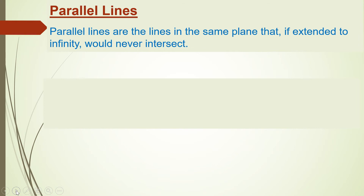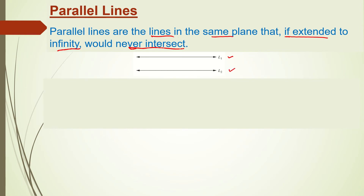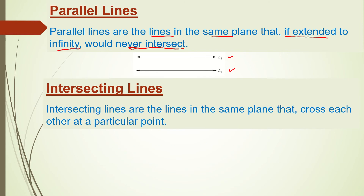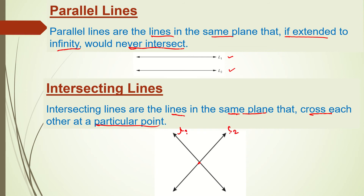Now let us talk about parallel lines and intersecting lines. Parallel lines are lines in the same plane that, if extended to infinity, would never intersect or cross each other. Lines L1 and L2 go in the same direction and can never meet. Intersecting lines are lines in the same plane that cross each other at a particular point — for example, L1 and L2 crossing at point P.